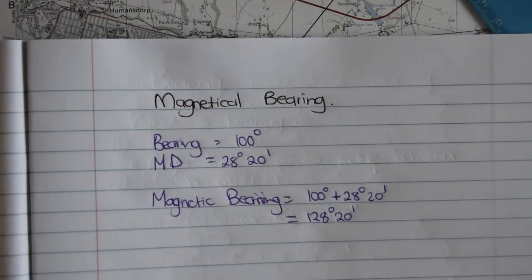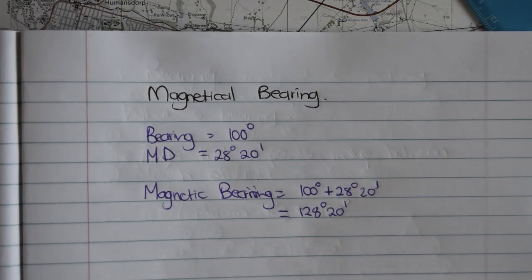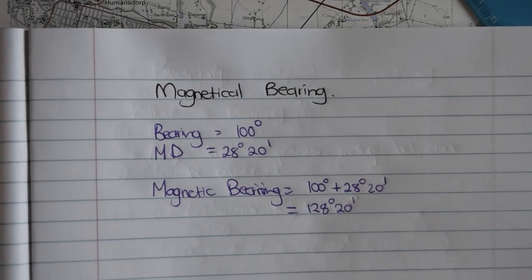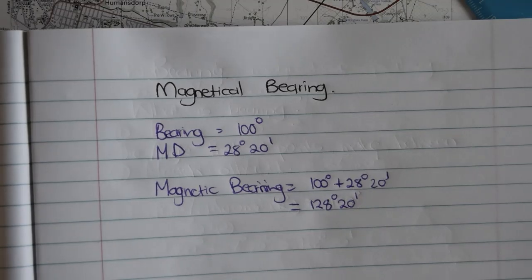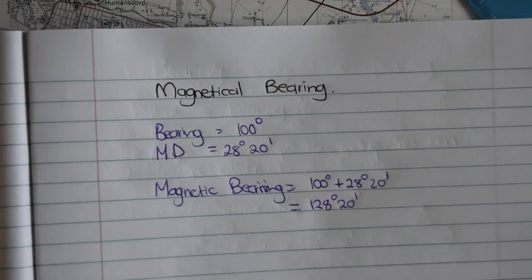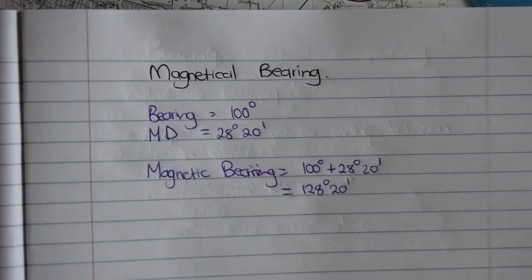I will try to post some practice scenarios by the end of the week. In the meantime, take your map workbook, choose two random points, and try to calculate the magnetic bearing yourself.